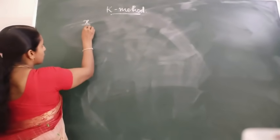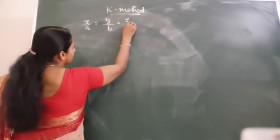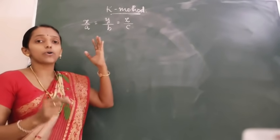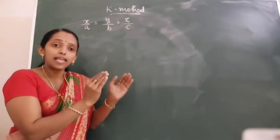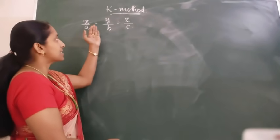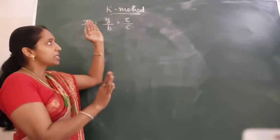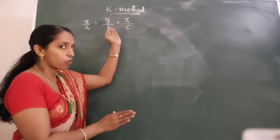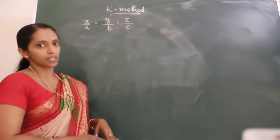If X upon A equals Y upon B equals Z upon C — this is given. With this given quantity you have to prove some questions. That means you will have a left-hand side as well as a right-hand side. By using this condition, if these ratios are in proportion — X upon A equal to Y upon B equal to Z upon C — then prove that.